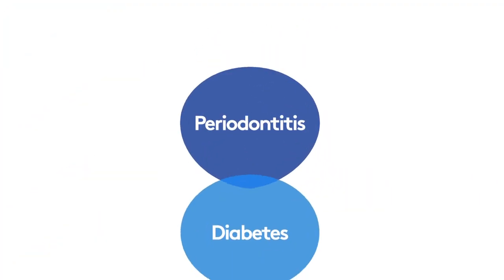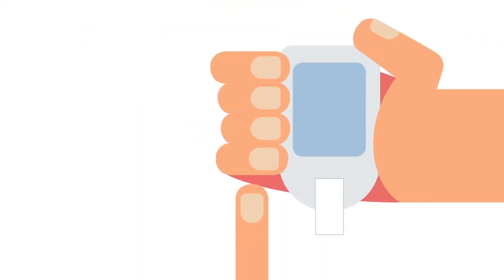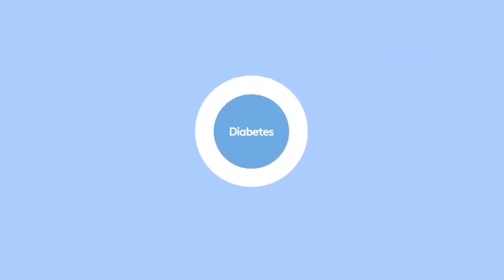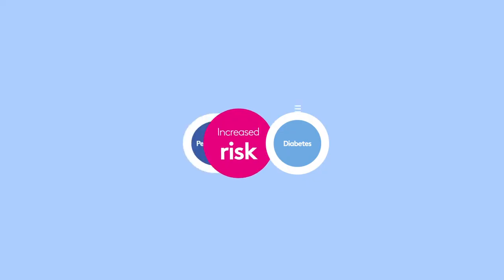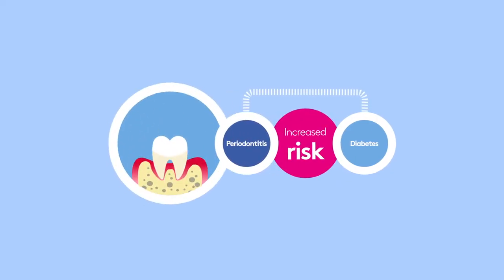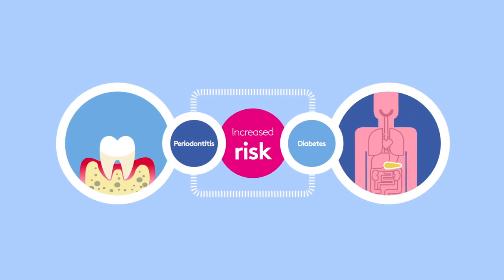Did you know that periodontitis and diabetes are closely linked? People with periodontitis are more likely to develop diabetes and vice versa. Diabetes increases the prevalence, progression and severity of periodontitis, and periodontitis influences blood sugar control in diabetes.